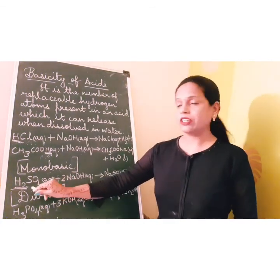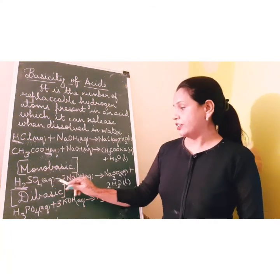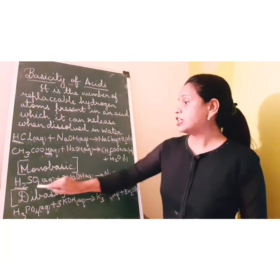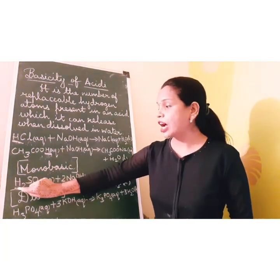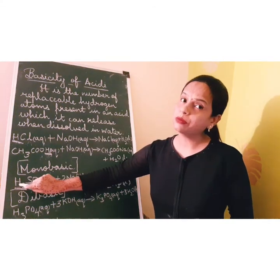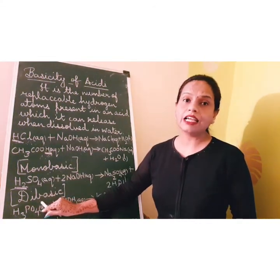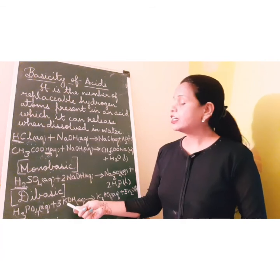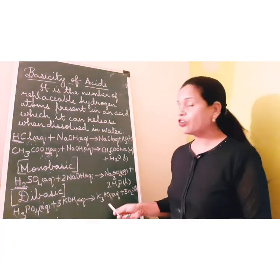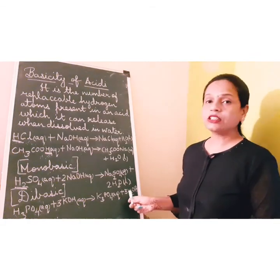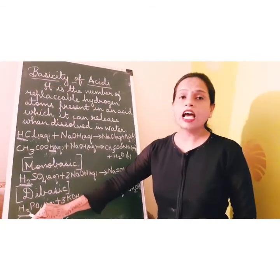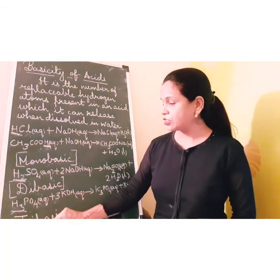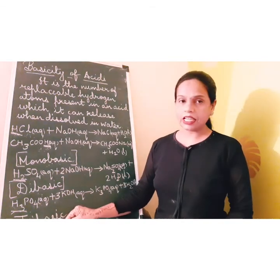Dilute sulfuric acid reacts with dilute sodium hydroxide forming sodium sulfate and water. Sulfuric acid has two hydrogen atoms and both are replaceable, so it is called dibasic. Phosphoric acid reacts with potassium hydroxide to form potassium phosphate and water. Phosphoric acid has three hydrogen atoms and all three are replaceable, so it is called tribasic.